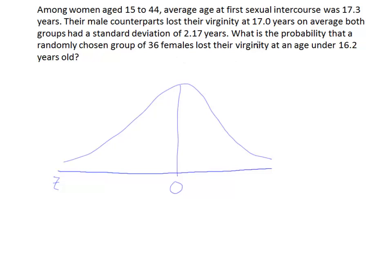So it's talking about what's the probability that a randomly chosen group of 36 females lost their virginity at an age under 16.2 years old. So that would be an average age of 16.2. This is for a group of 36.